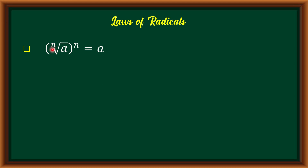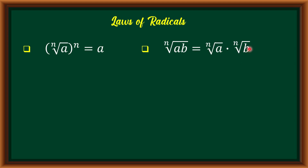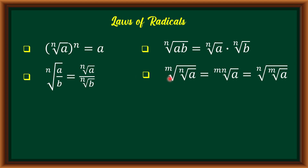The first law is: the nth root of a raised to n is equal to a. Next, the nth root of a times b is equal to the nth root of a times the nth root of b. Next, the nth root of a over b is equal to the nth root of a over the nth root of b. And the last one is: the nth root of the mth root of a is equal to the m times nth root of a, which is also equal to the nth root of the mth root of a.